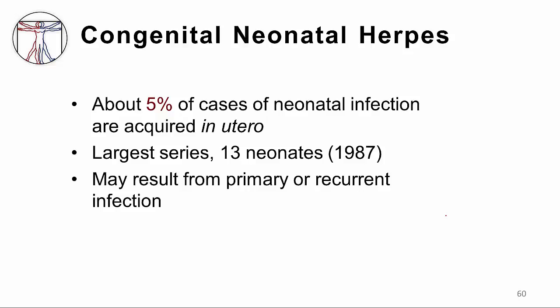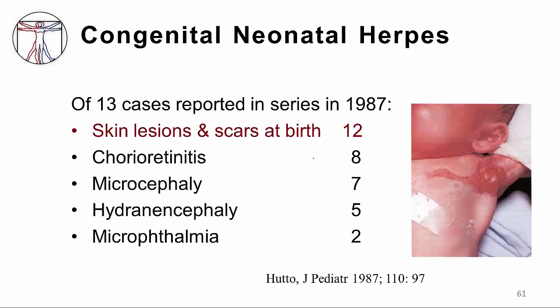Neonatal infection may also be congenital in type, meaning it is acquired in utero, typically during the first trimester of pregnancy. This is not common and represents less than 5% of all cases of neonatal infection; the other 95% are acquired around the time of delivery. The largest series of patients with congenital neonatal herpes was published in 1987 and involved 13 babies, the most prominent clinical feature of which was skin lesions and scars at birth, as demonstrated in the picture on the right.